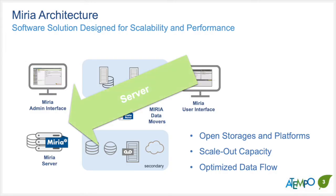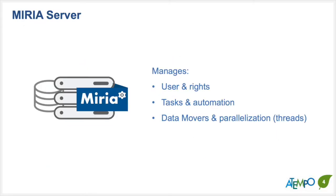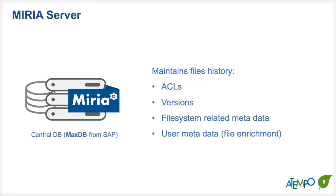The Miria server is — think of it as your traffic cop. It controls all of the functions: who does what, assigning tasks, spinning up data movers, number of threads. One of the critical things here is a centralized unique database based on MaxDB. Miria maintains basically all file history, ACLs, revisions, specific file system metadata, and customized metadata that you can add into files before backing them up or archiving. That metadata is searchable as well.